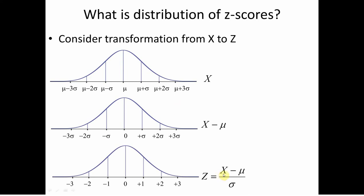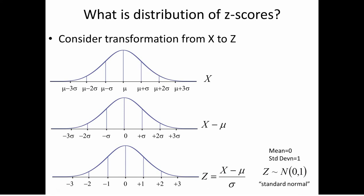Finally, I divide by sigma. Although not drawn to scale, I claim this is still a normal distribution — and we can actually prove this because we did this coordinate transformation before. The variable z has a mean of zero and a standard deviation of one. This new random variable has a very important name: it's called the standard normal.